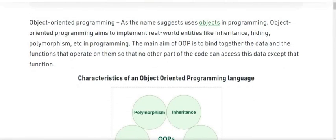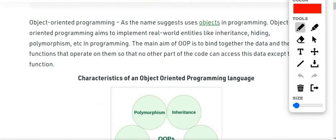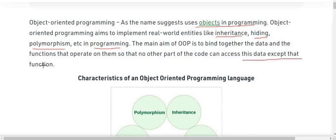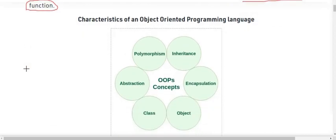First of all, what is object-oriented programming? As the name suggests, it uses objects in programming. Object-oriented programming aims to implement real-world entities like inheritance, hiding, polymorphism, etc. in programming. The main aim of OOP is to bind together the data and the functions that operate on them, so that no other part of the code can access this data except the functions which are allowed to access these data members.